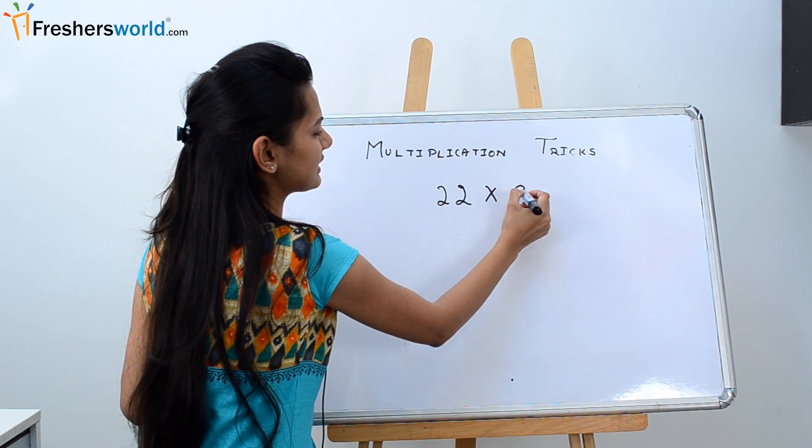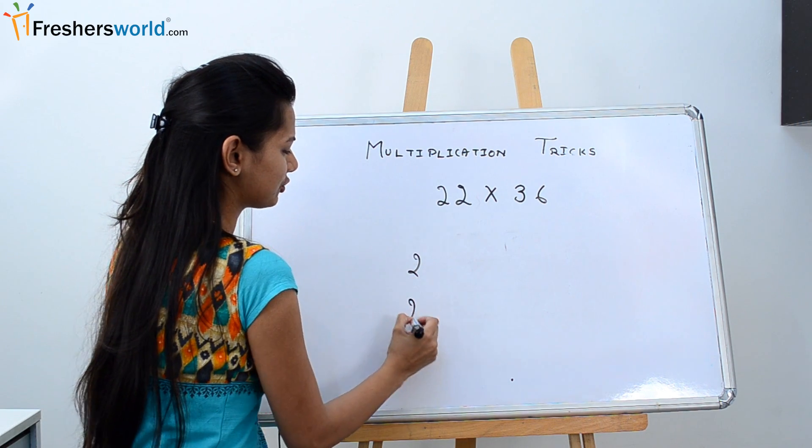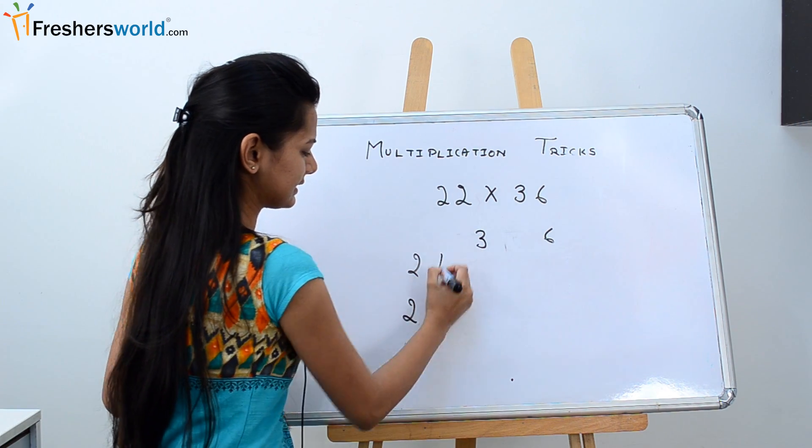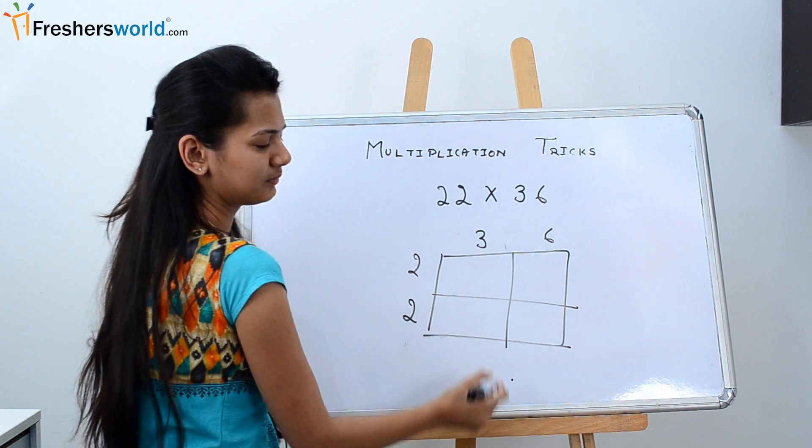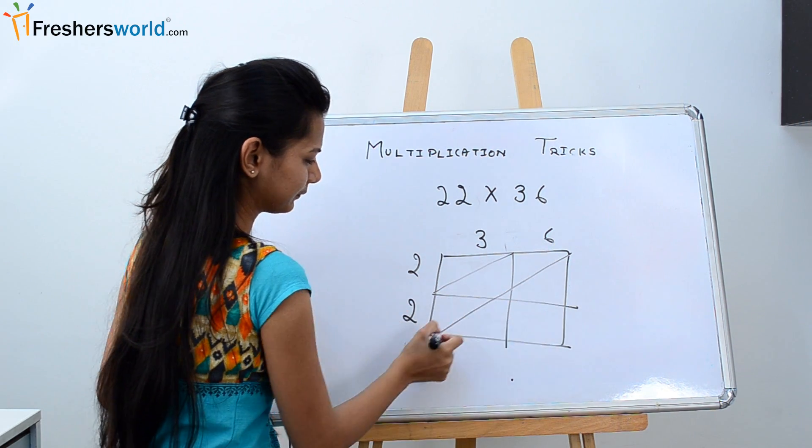Say 22 into 36. I will write 22 and 36 this way. Put a box around them, divide them equally.